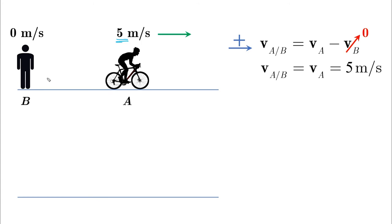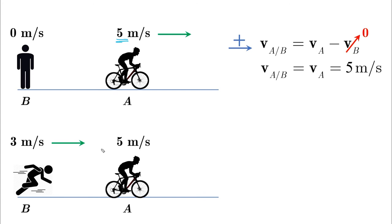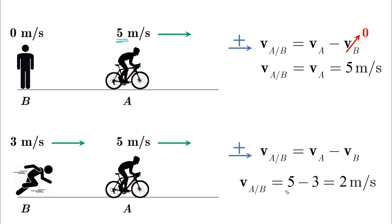But what if B is running at 3 meters per second and A is at 5 meters per second, both to the right? Using the same equation, VA is 5, VB is 3, and VA relative to B is only 2 meters per second. This means B is not seeing and feeling the actual velocity of A — with reference to B, he sees only that A is getting away from him at 2 meters per second.